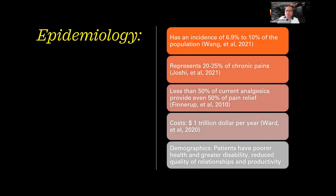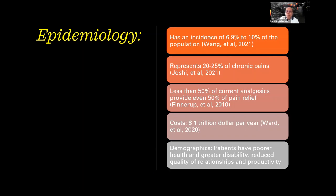So the epidemiology — this is very new. In a research done by Dr. Wang, there's about 6.9 to 10% of the population suffering from this problem. It represents 20 to 25% of chronic pains. The bad news is that less than 50% of the current analgesics provide even 50% pain relief. That's very frustrating. The cost is $1 trillion per year, which is the amount of money needed to address this problem.